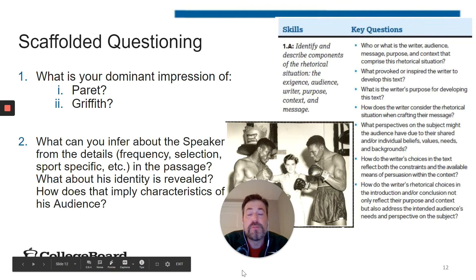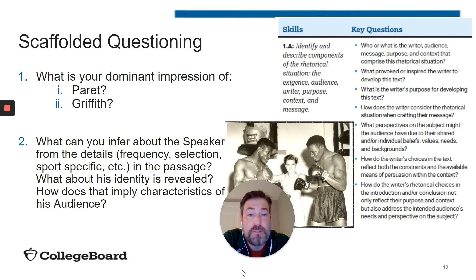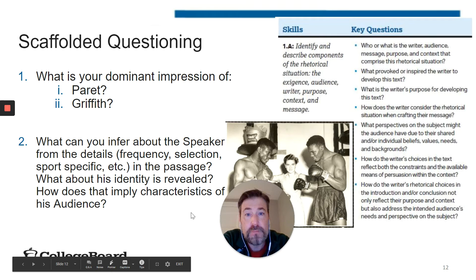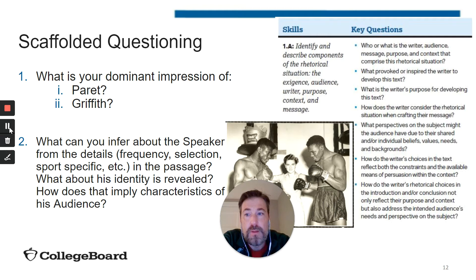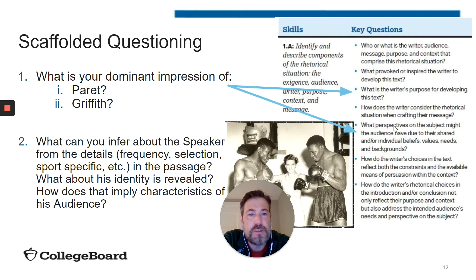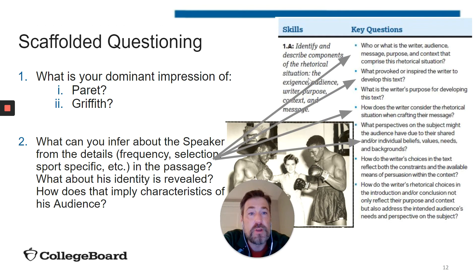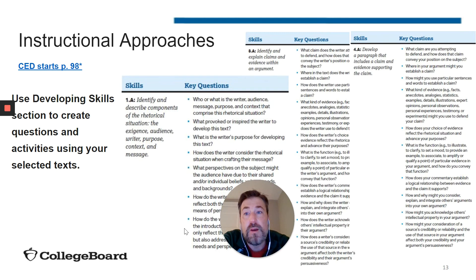For years I've done a Socratic discussion with this passage. I had these questions — the way I originally had them worded: What is your dominant impression of Brett? What is your dominant impression of Griffith? What can you infer about the speaker from the details — they're sports specific, the frequency of detail — what does that tell you about his identity? Because in the passage the writer is not identified. What I want you to see is that these questions match up to what's in that sequence. My 'what's your dominant impression' is really asking the key questions in the CED: What is the writer's purpose? What perspective of the subject might the audience have? And the second set of questions — who or what is the writer's audience, what provoked or inspired the writer, what does this imply about the writer's identity? These are all questions I can now pull from the key questions area of the CED.